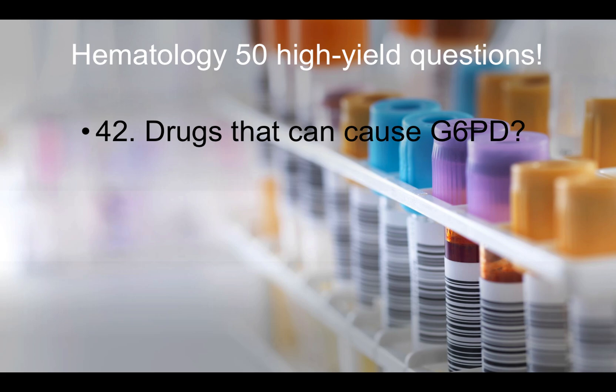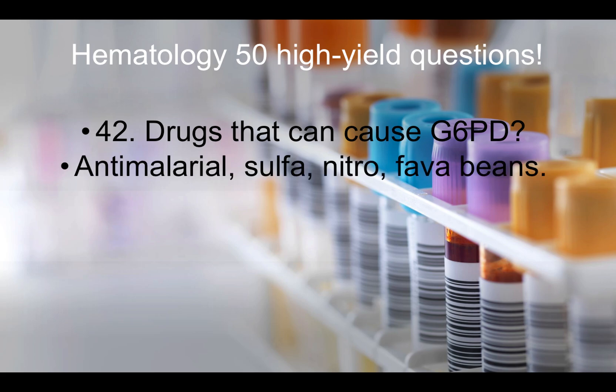Question forty-two: Drugs that can cause G6PD hemolysis — that would be antimalarial drugs, sulfa, nitro, and fava beans. They can list all of them or ask for just one. If you see G6PD, think antimalarial drugs, sulfa, nitro, and fava beans.